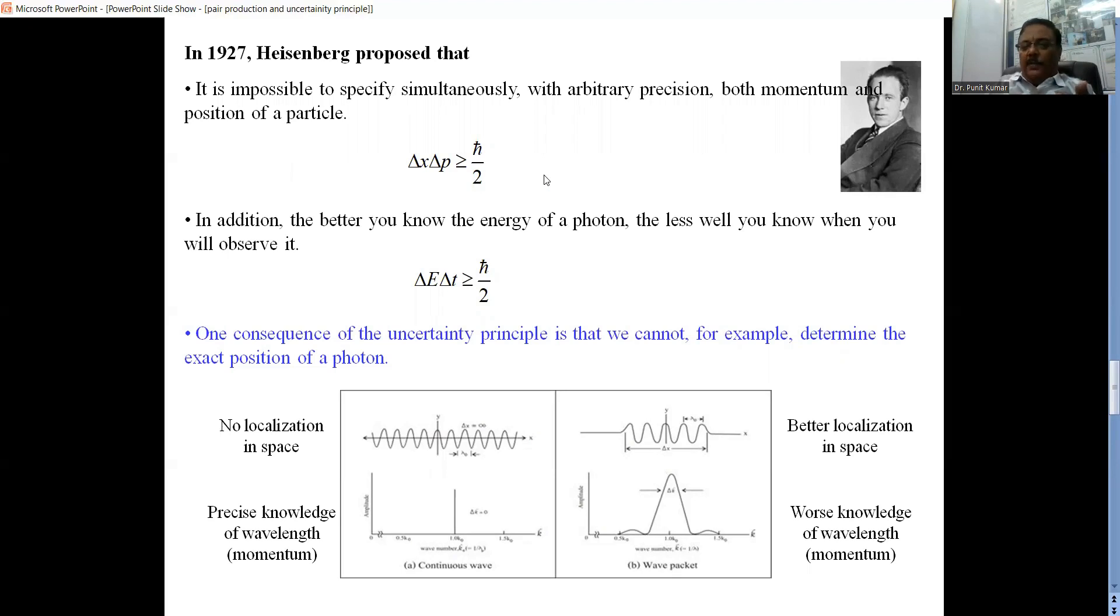We can calculate the dimensions of the position multiplied by momentum. We get another pair, energy and time. They are having the same dimensions as the product of momentum and position. So we can derive this relation.